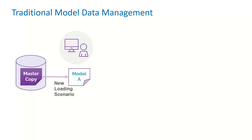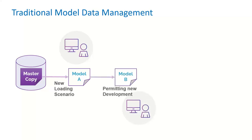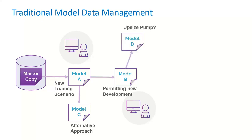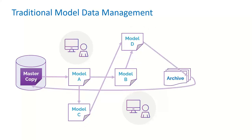This is Bob — he works for an engineering consulting firm. He gets a copy of the master model and begins updating information, playing with calibration parameters. Meanwhile, Sally — in the age of remote work, maybe in a different state — gets another copy and begins doing capacity analysis to look at the impacts of a new development for permitting. Bob has updated land use values and made changes in his version, while Sally has determined there's a need for a new pump. Now we need to get all of these changes into an archivable state and back into the master copy.